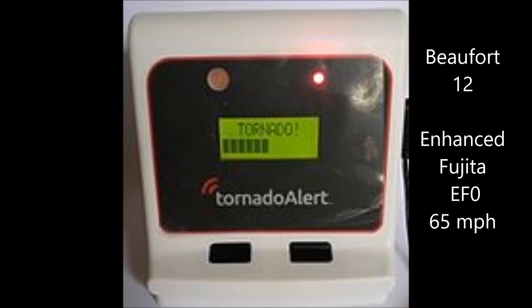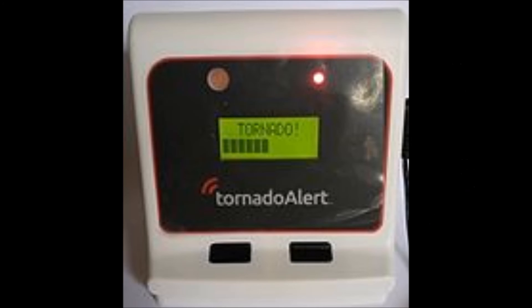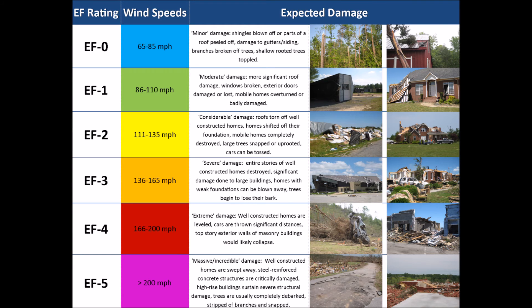Force 12 winds are destructive. Any unsecured objects are hurled or pelted, and there is now widespread damage to all structures. The wind speed is above 118 km per hour, and is often classified as a category 1 hurricane.